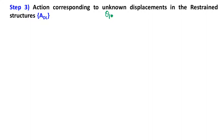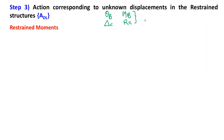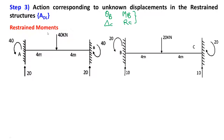Now we need to find the ADL vector — actions corresponding to unknown displacements in the restrained structure. The first unknown is theta_B, so we need moment at B; the second unknown is delta_C, so we need vertical reaction at C. We restrain all supports and draw the two members AB and BC separately with all ends fixed. Now we calculate the restrained moments.